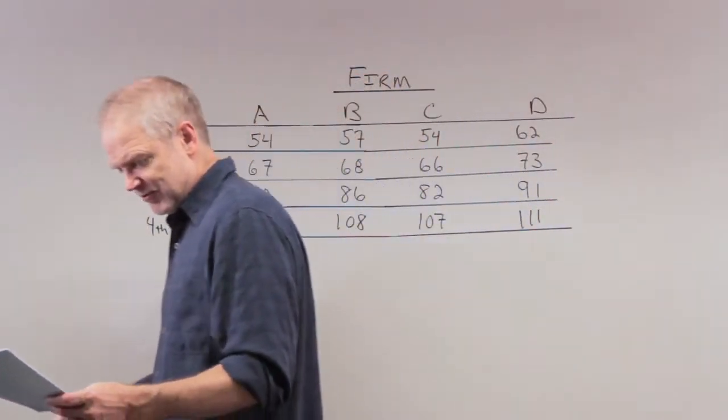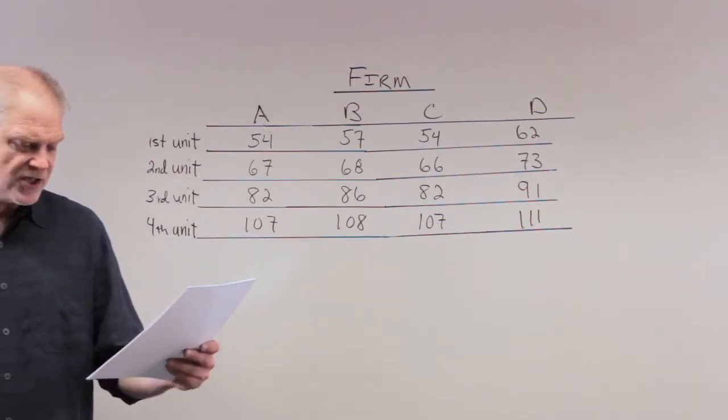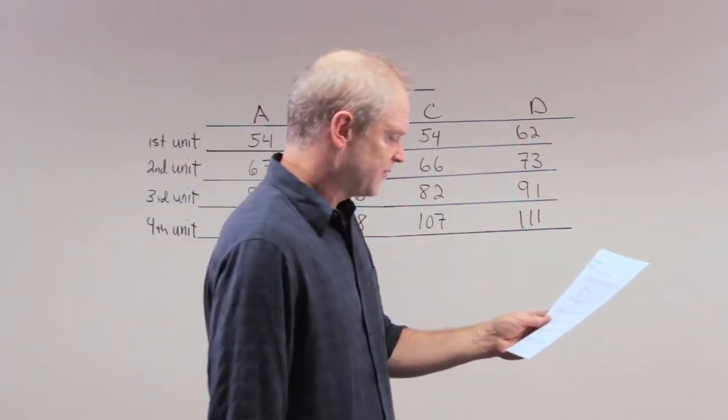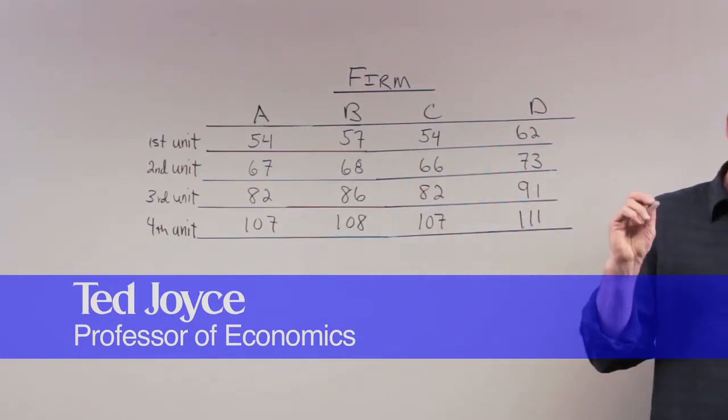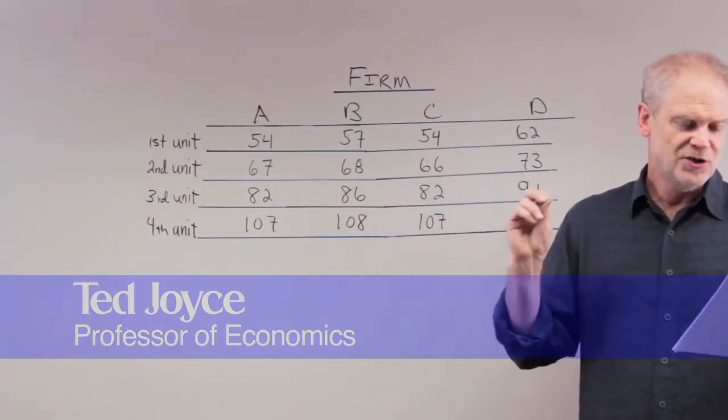Number five in this table. This is a very useful table here. Now, suppose the government wants to reduce pollution from 16 units to 8 units, and auction off 8 pollution permits to achieve this goal.